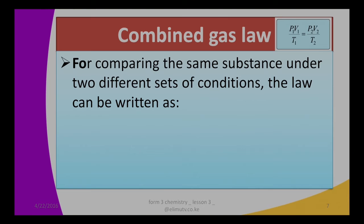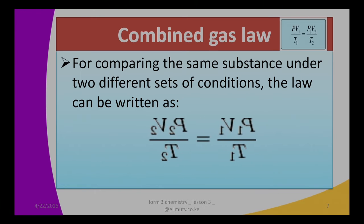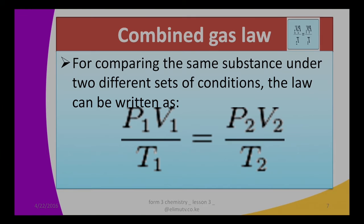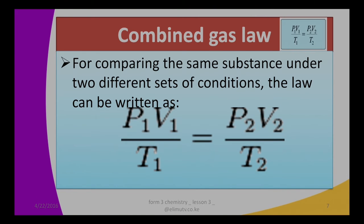Still in the Combined Gas Law, we now compare the same substance under two different sets of conditions. For comparing two sets of conditions, we have condition one and condition two: P1 multiplied by V1, divided by T1, equals P2 multiplied by V2, divided by T2. So P1V1 over T1 equals P2V2 over T2. This is Combined Gas Law — pressure one times volume one divided by temperature one equals pressure two times volume two divided by temperature two, in an enclosed system.